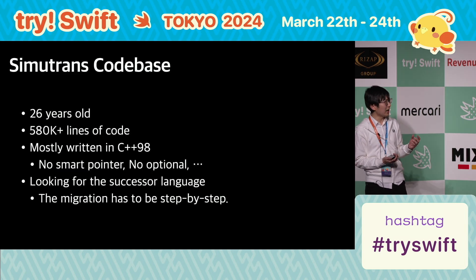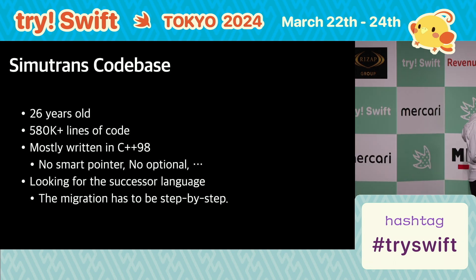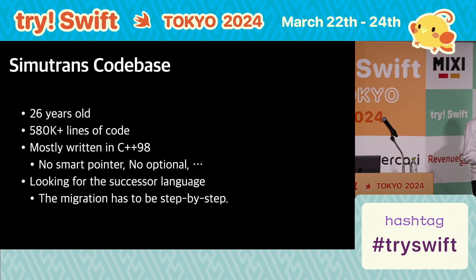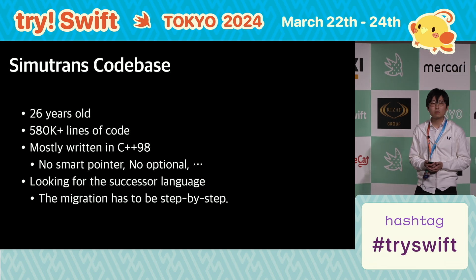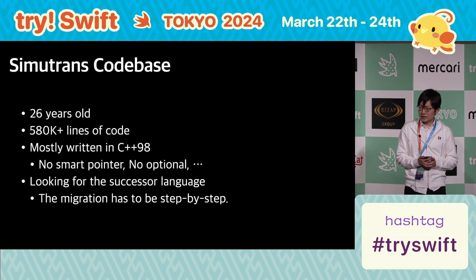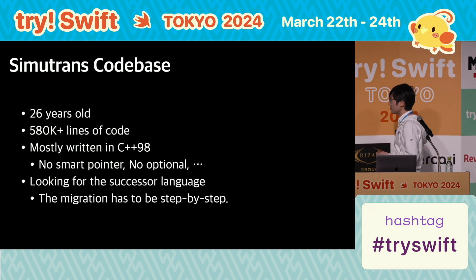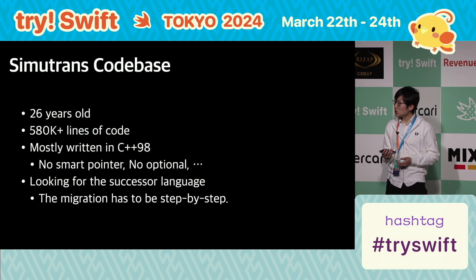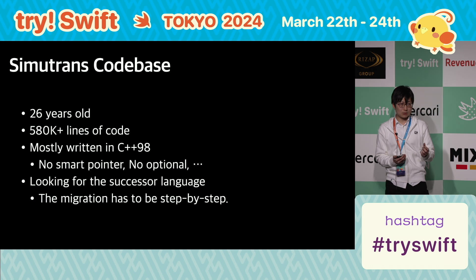So, to reduce this kind of crash and modernize the code base, I'm now looking for a successor language. The new language should prevent null pointer access and have safe, automated memory management. However, the code base is already large, and I cannot rewrite the whole project at once. The migration has to be step by step. In this situation, what is the best candidate for modernizing the C++ code?